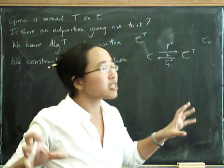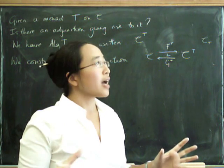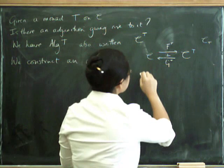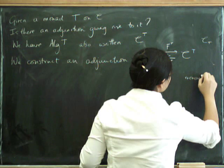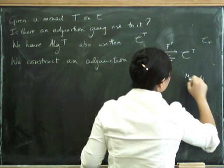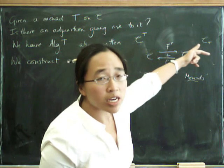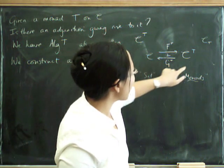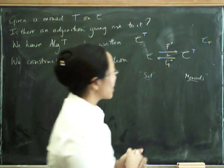So the point is, let's think for a second about one of our key examples, which was the monad for monoids. Here you can think to yourself set, and here you can think to yourself monoids, a category of monoids. Here we have the free monoid construction, and here we have the forgetful functor that took a monoid and went back to its underlying set.